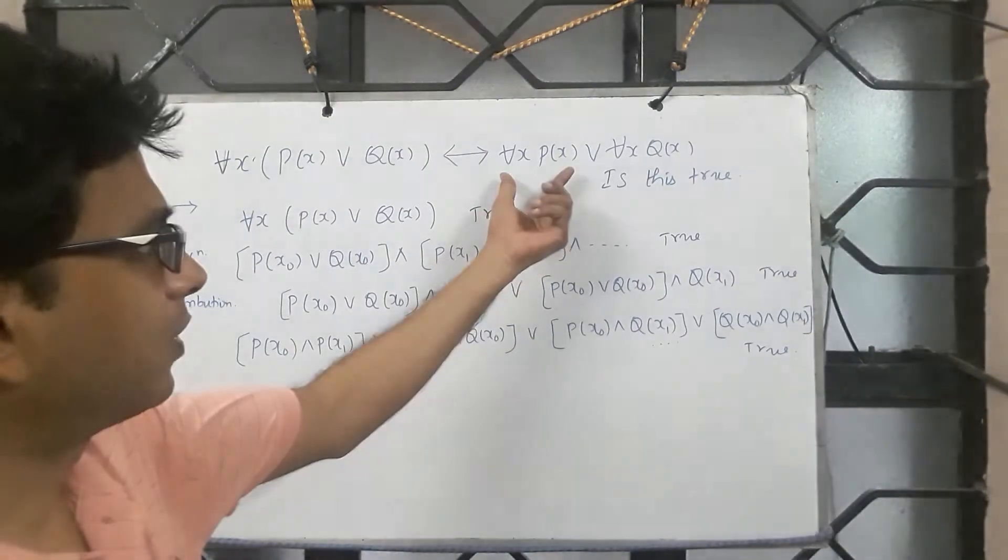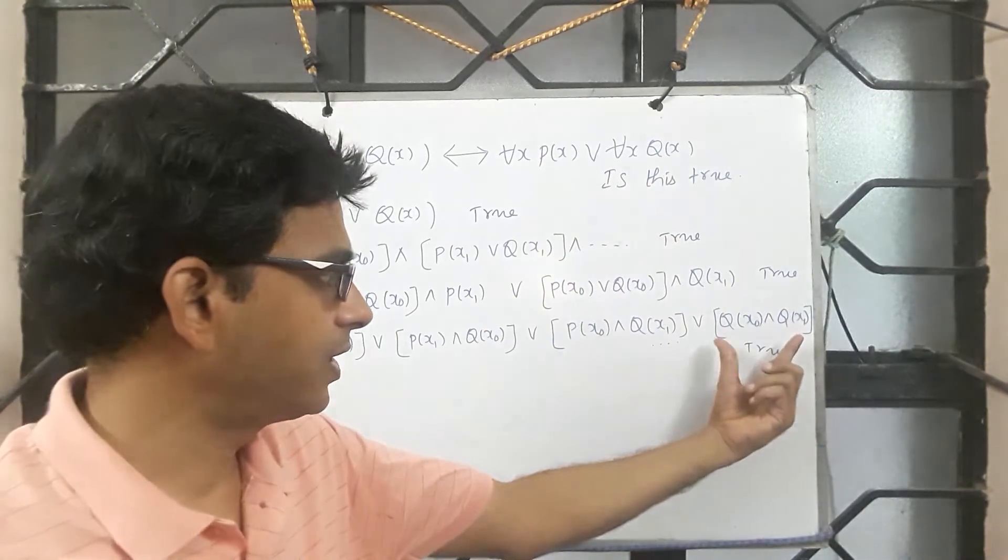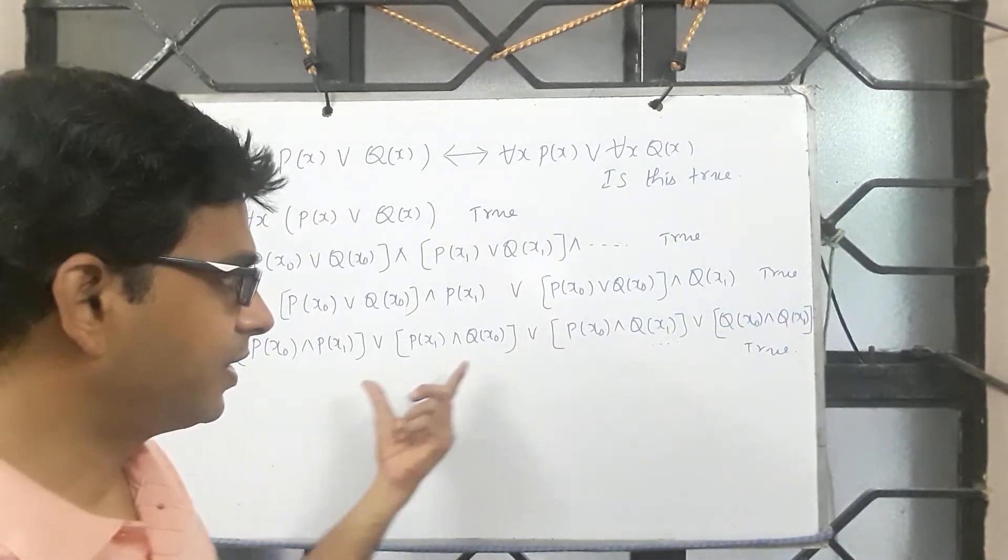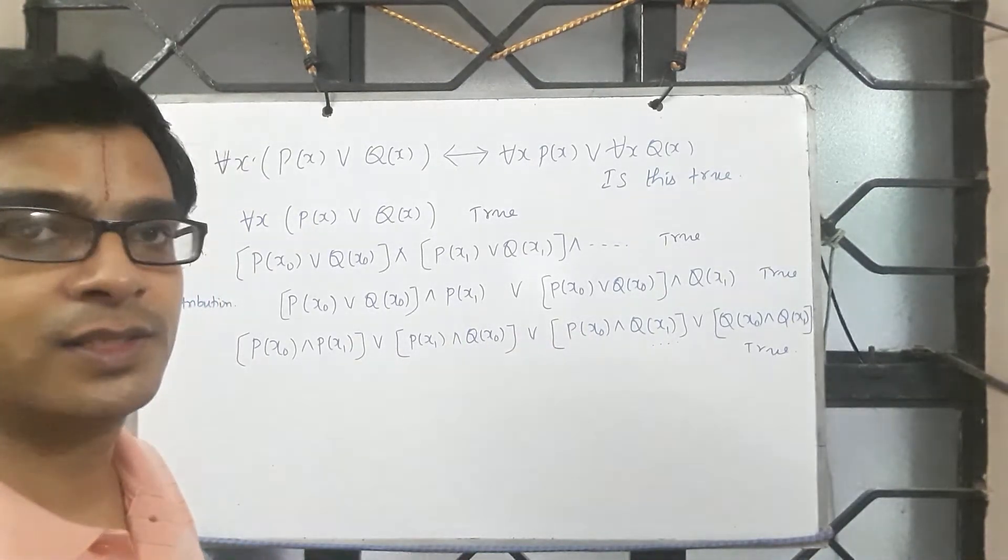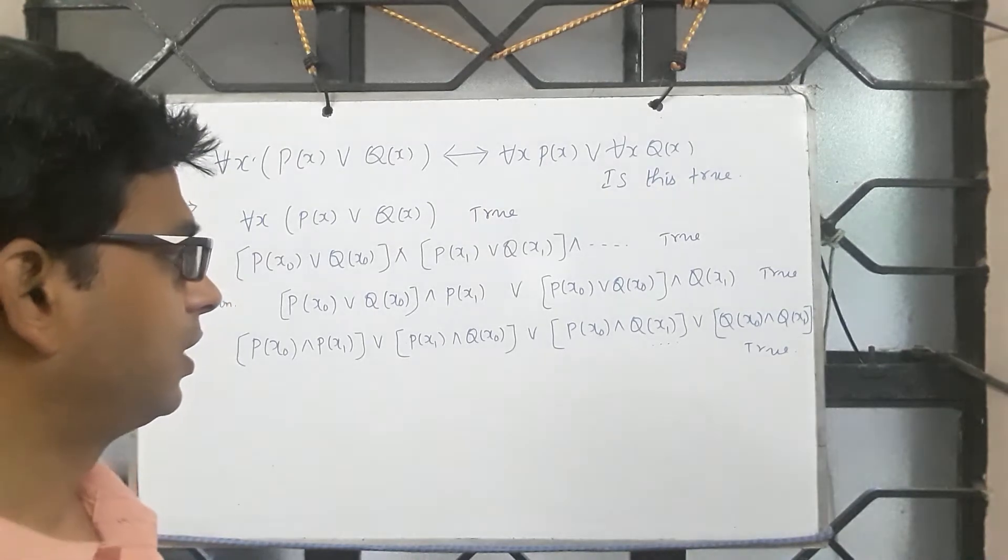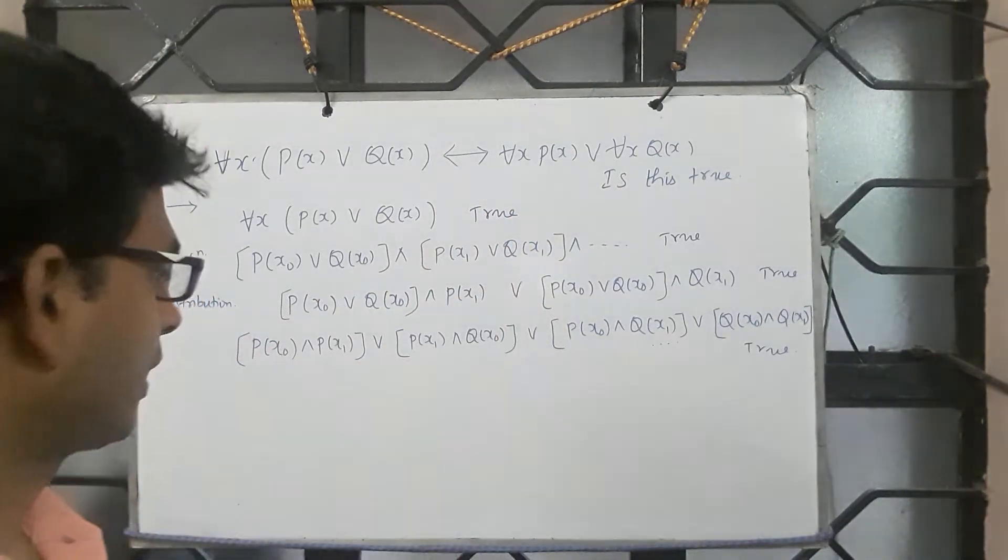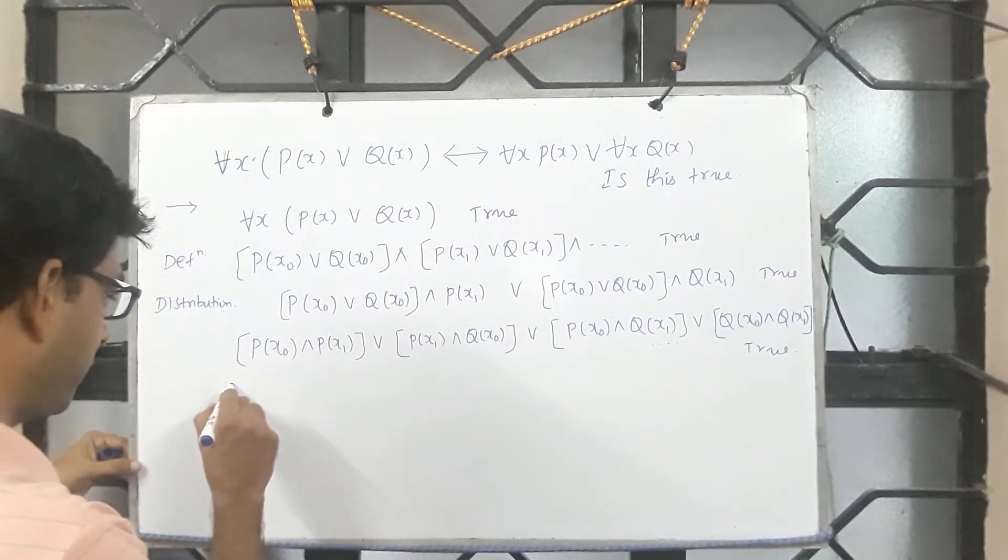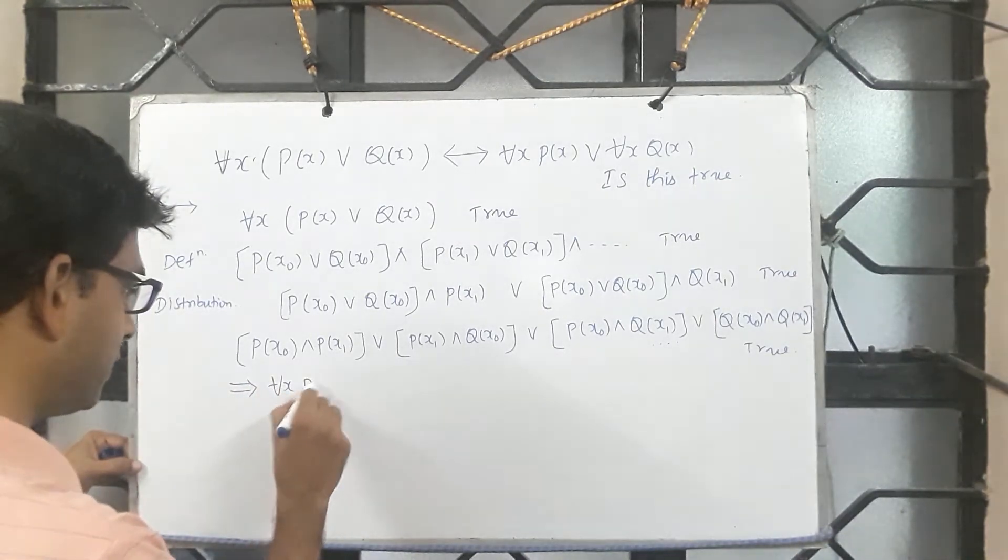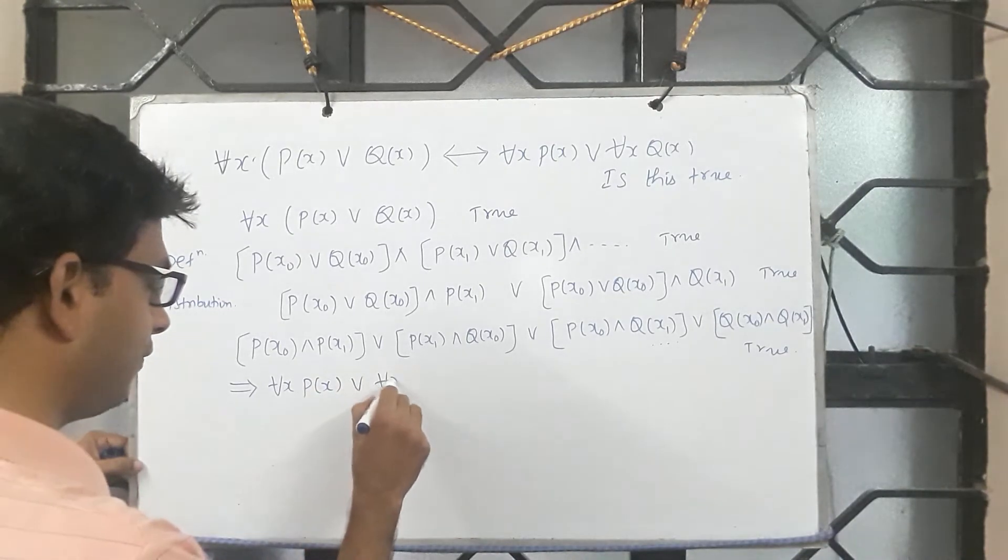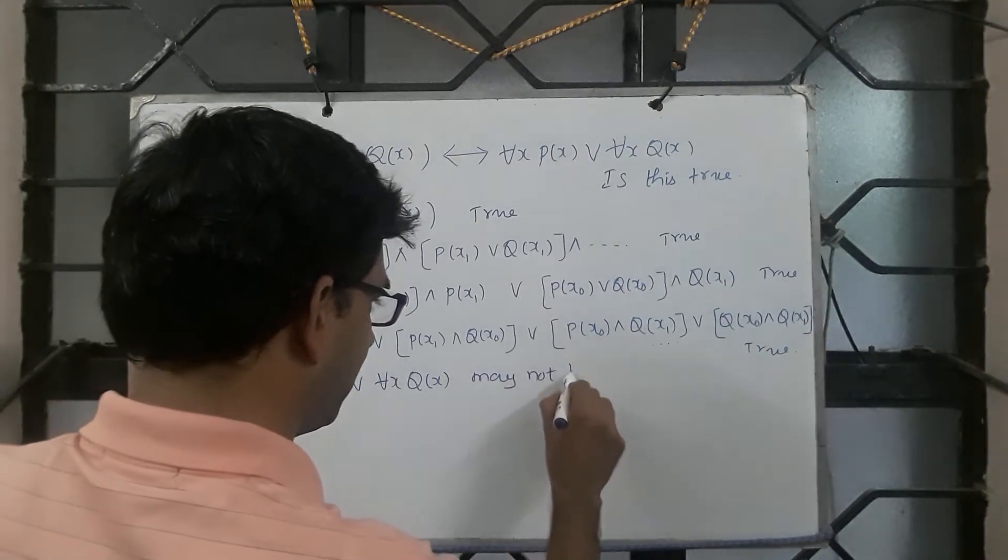So I have to conclude for all x P(x) and for all x Q(x), but there are other terms in the expression. Probably the expression is true because of these sub-expressions. From this I may not be able to conclude these two. So this implies for all x P(x) or for all x Q(x) may not be true.